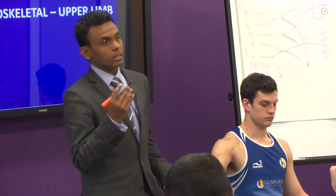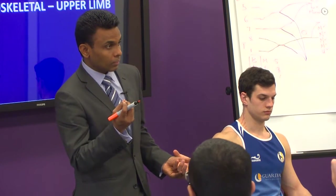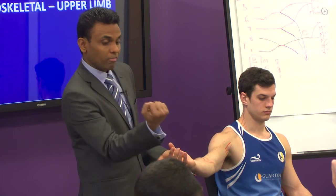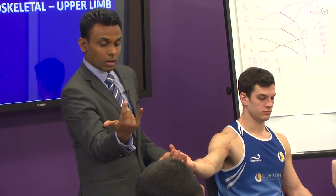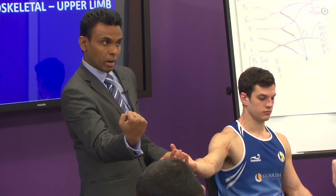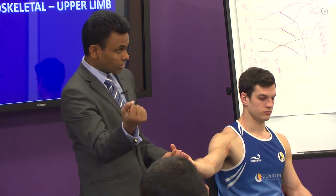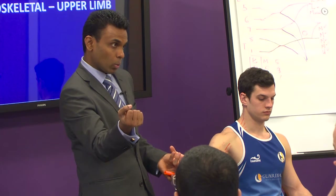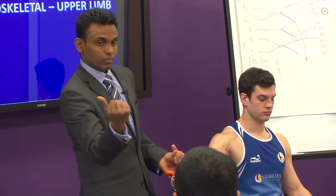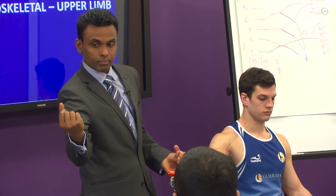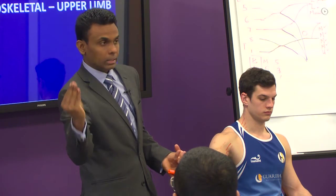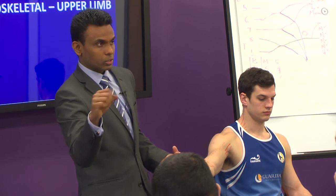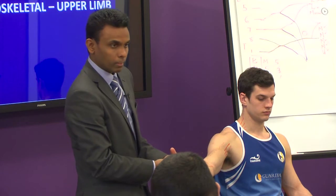In a patient with anterior interosseous nerve injury, the patient will have lots of normal function because the FCR is intact — so the patient will be able to flex the wrist. They will have some pronation because the pronator teres is working. But they will have specific loss of function in the thumb, in the DIPJ, and the pronator quadratus. That is the anterior interosseous nerve syndrome.